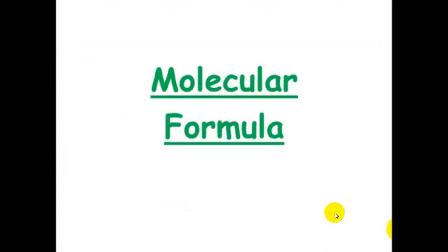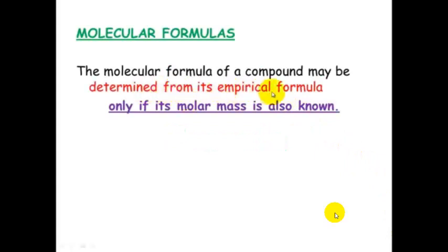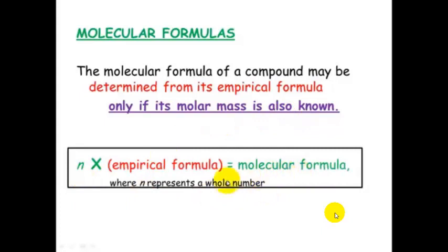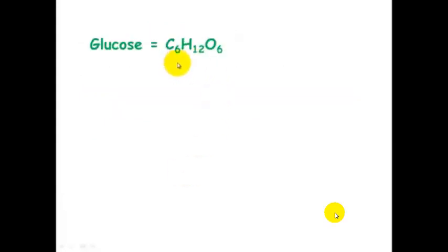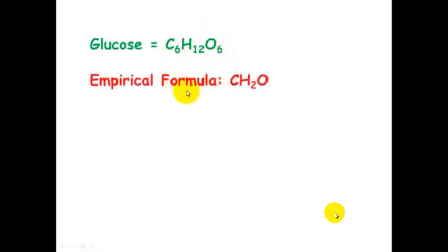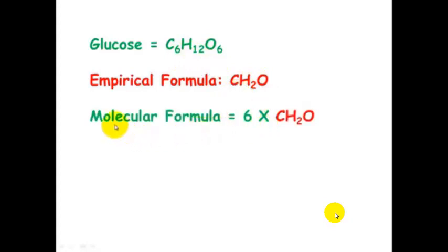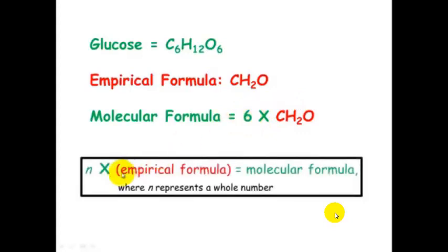Now for molecular formula. Molecular formula can be determined from the empirical formula, but only if the molar mass of the compound is also known. The molecular formula equals a whole number multiplied by the empirical formula. What we need to work out is what that whole number is.